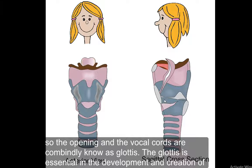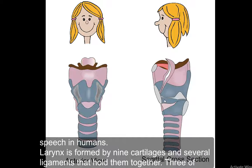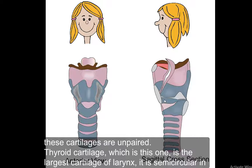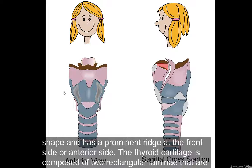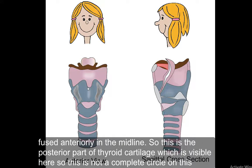The glottis is essential in the development and creation of speech in humans. The larynx is formed by nine cartilages and several ligaments that hold them together. Three of these cartilages are unpaired. The thyroid cartilage is the largest cartilage of the larynx — it is semicircular in shape and has a prominent ridge at the anterior side. The thyroid cartilage is composed of two rectangular laminae that are fused anteriorly in the midline.